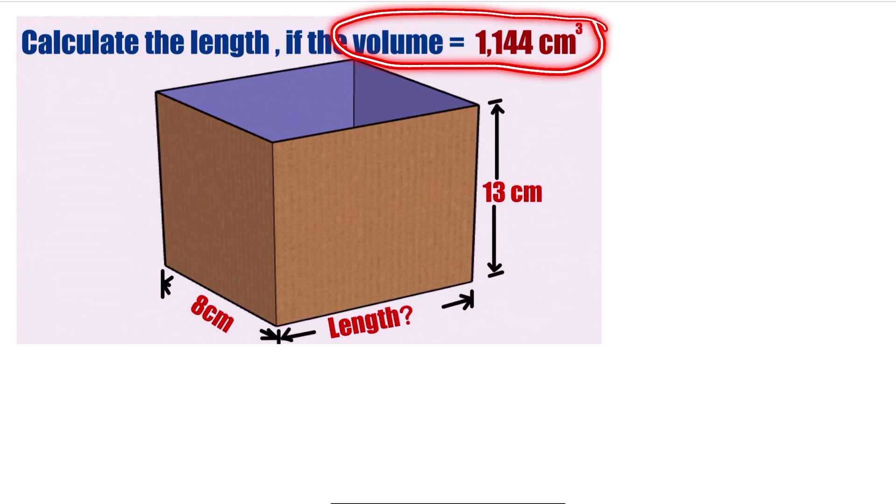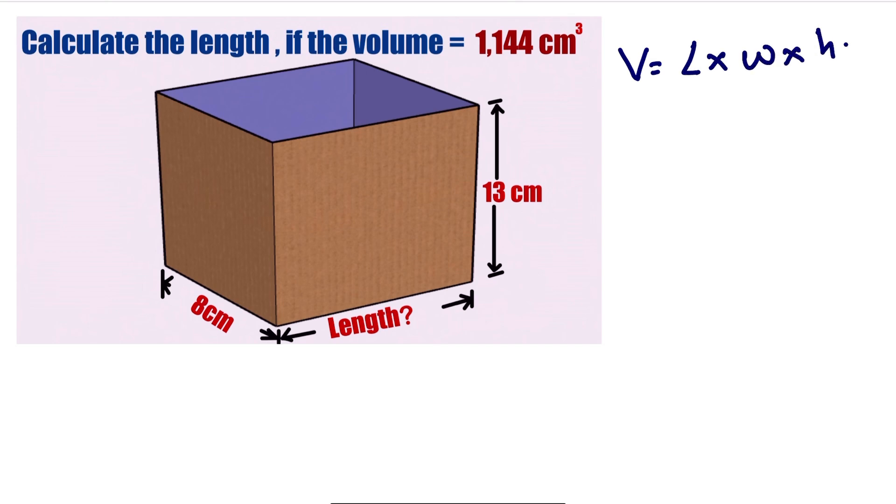We can write the formula of volume so that we are going to find the value of the length. Since they gave us volume, you write the formula of volume. The volume of a cuboid is the length times the width times the height. So we just plug in various values.